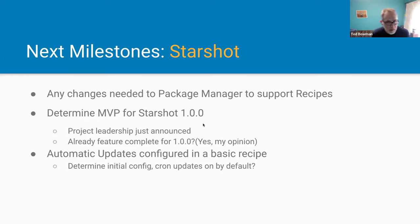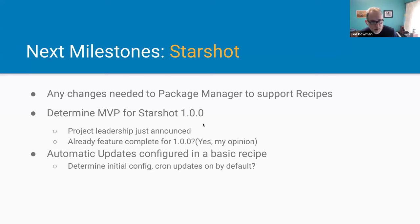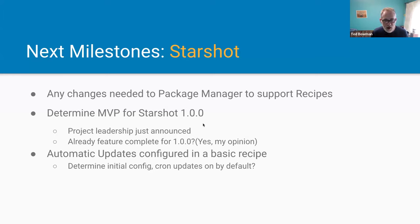For Starshot, we need any changes required for Package Manager to support recipes. We wrote Package Manager as a general Composer API, but now that we have recipes we may need changes — we're finding a couple of edge cases already. We also need to determine the MVP for Starshot; project leadership was just announced. Is it already feature complete for 1.0.0? In my opinion yes — we could add it now, the automatic update part is good. The recipe part is getting done. But we'll need to figure that out now that leadership is announced.